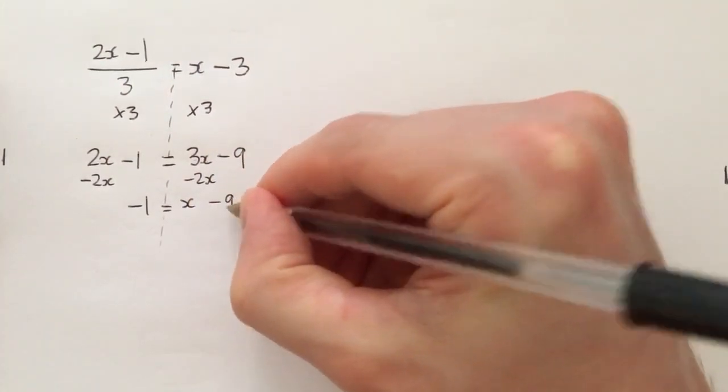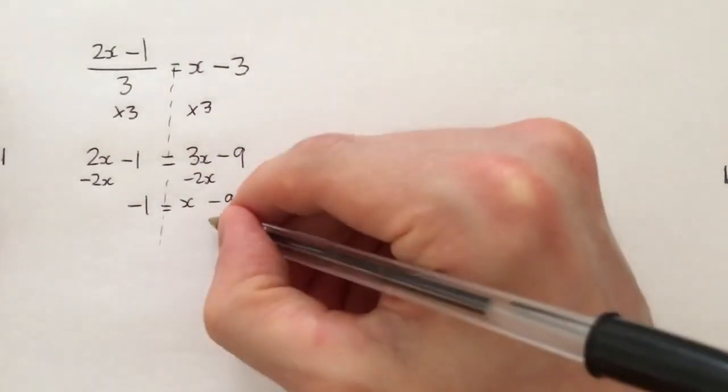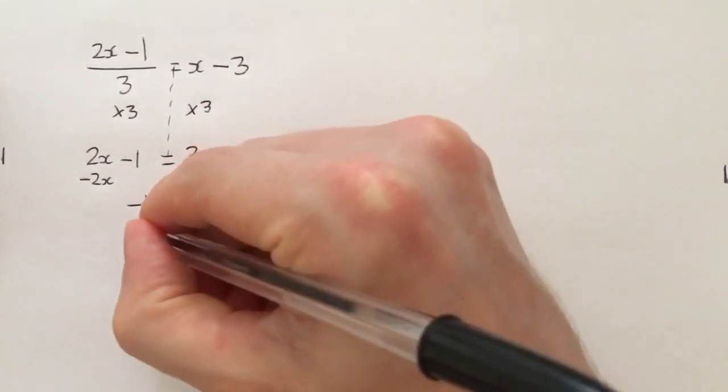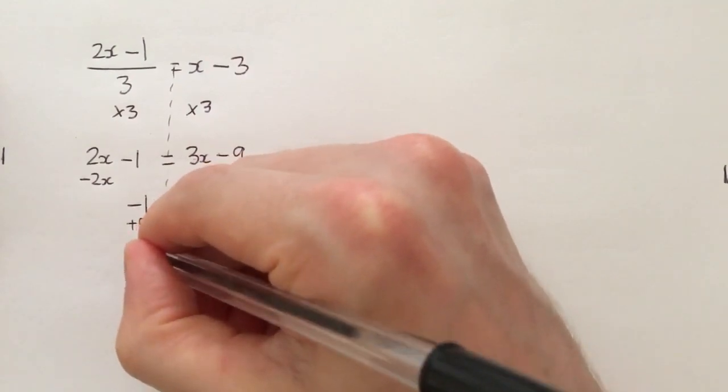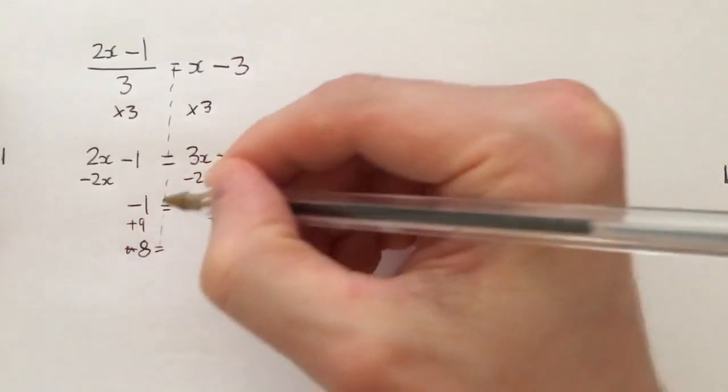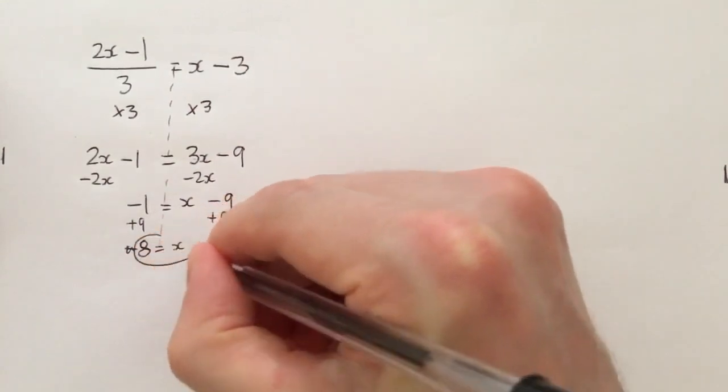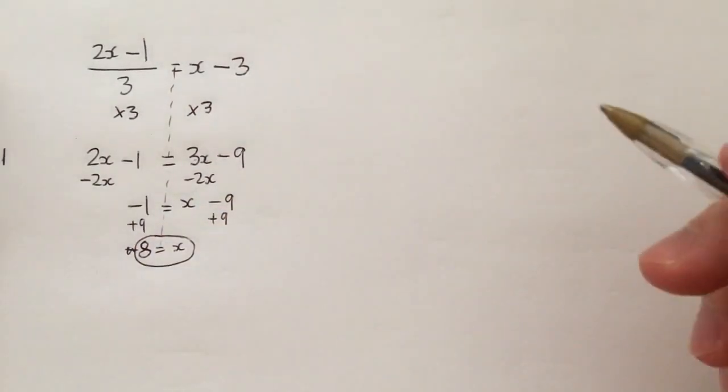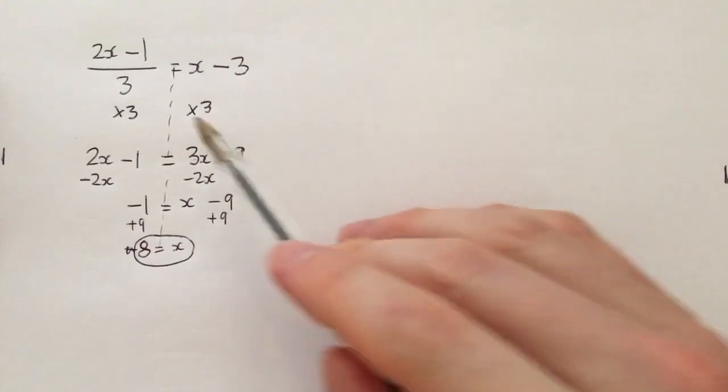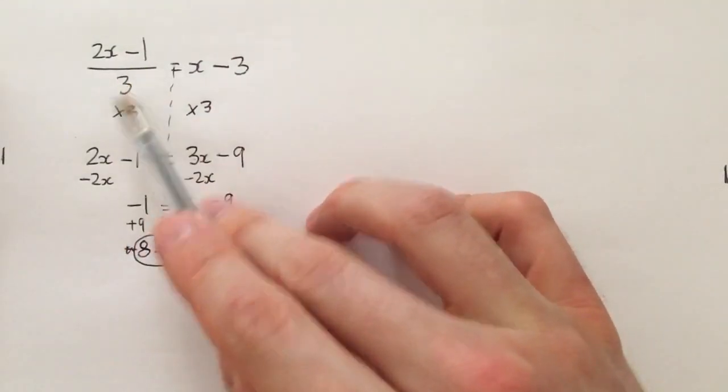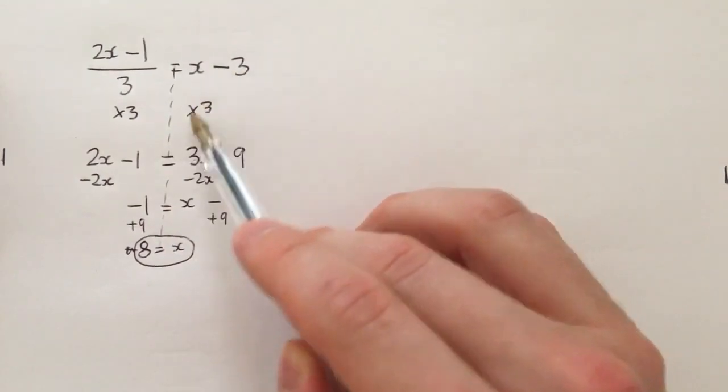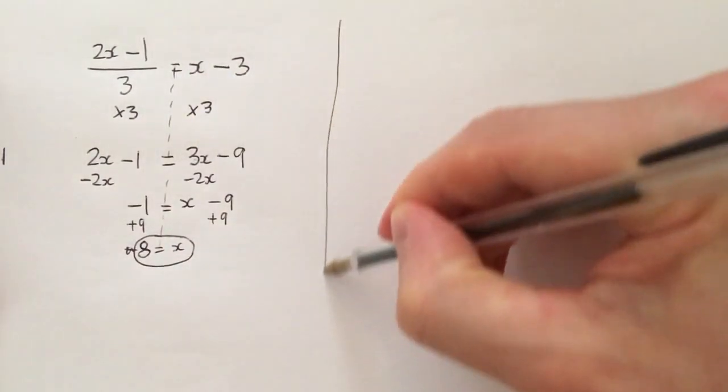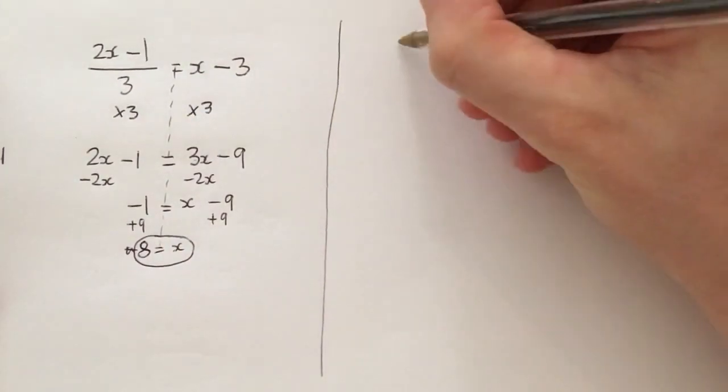If I need to minus 9 here, then to get x by itself I will add 9, add 9 to get 8 equals x. Final answer. Okay, so the big big big step here was our first step. I divided by 3, opposite of that it times by 3, times by 3, but then you must do it to both of them.